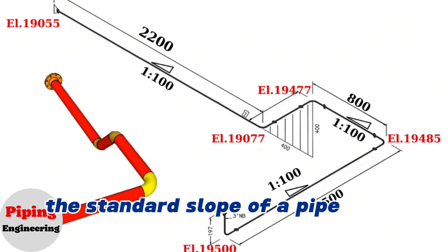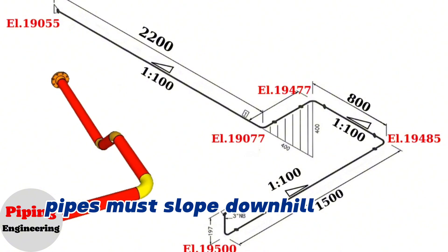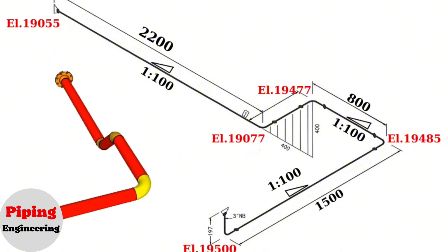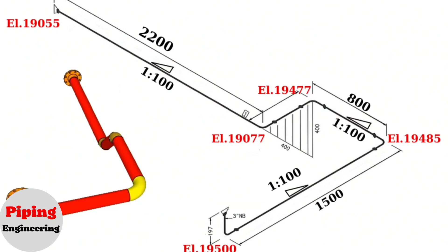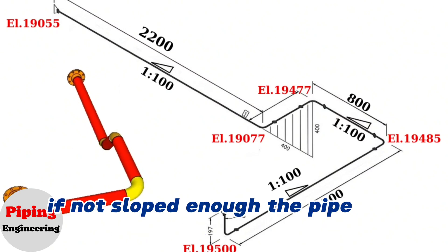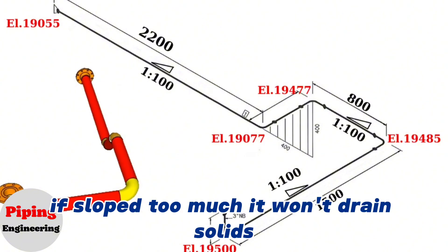The standard slope of a pipe is a quarter inch to three inches. Pipes must slope downhill to drain correctly. Proper slope calculation is essential for draining. If not sloped enough, the pipe won't drain. If sloped too much, it won't drain solids.